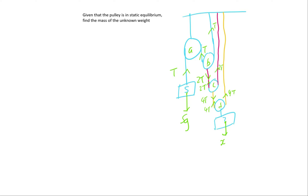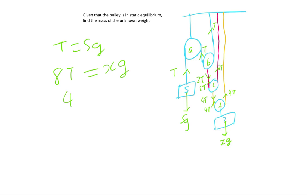There is an unknown weight X acting downwards. Since it is in static equilibrium, T equals 5g. For our last unknown weight, we have a total of 8T acting on it, and X g acting downwards, and they are equal because it is not moving, so 8T equals Xg. Since T equals 5g, 8T is equivalent to 40g, which tells us that the mass of the unknown weight X is equivalent to 40 kg.